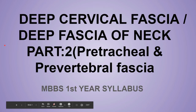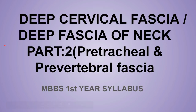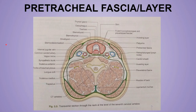Hello everyone. Today we will discuss the pre-tracheal and pre-vertebral fascia of the deep cervical fascia of the neck. First of all, the pre-tracheal fascia mainly encloses and suspends the thyroid gland, and also forms the false capsule of the thyroid gland. Remember, it forms the false capsule of the thyroid gland.